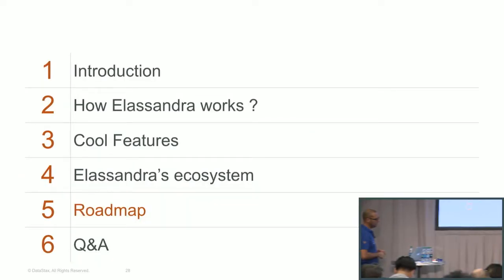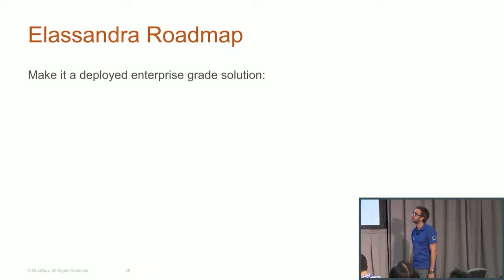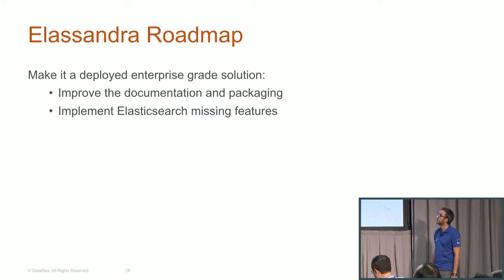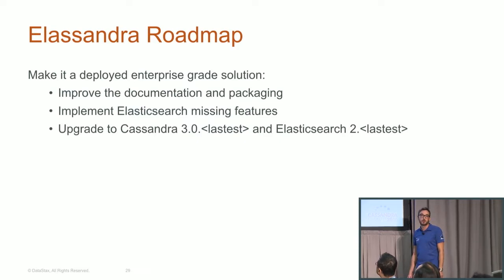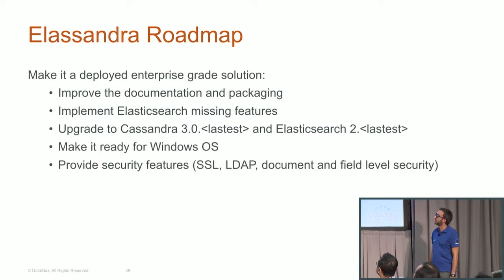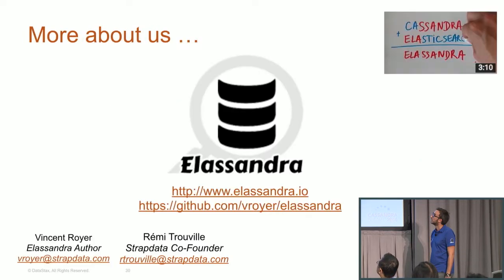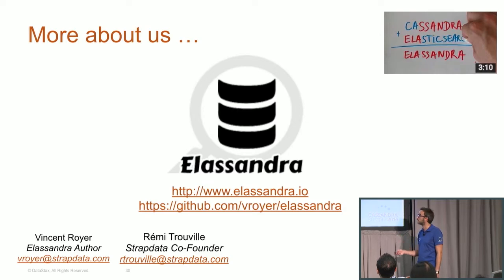Our roadmap goal is to make Elasandra an enterprise-grade solution. We will continue improving the documentation, code, and packaging. We will also upgrade to Cassandra 3 and Elasticsearch 2.4. We will finish coding all security features to make it production-ready and deliver professional services including support. More information is available at elasandra.io, the open source code is on GitHub, and there are additional materials like videos and a blog.